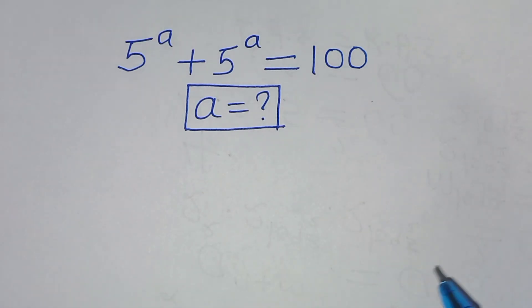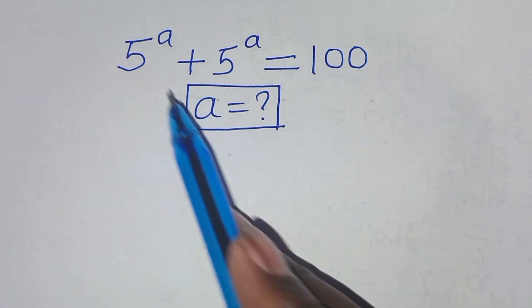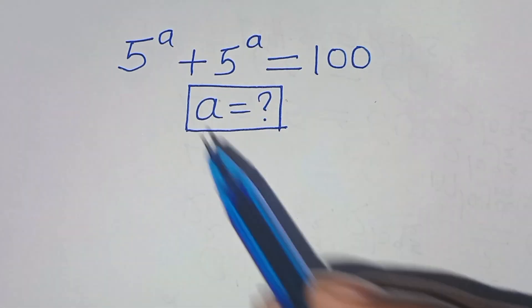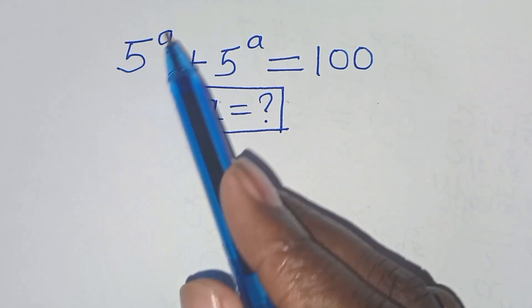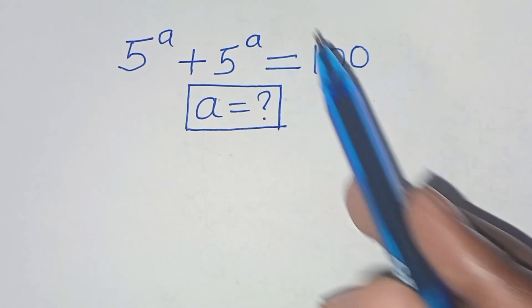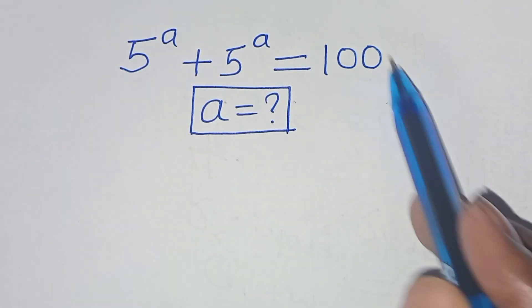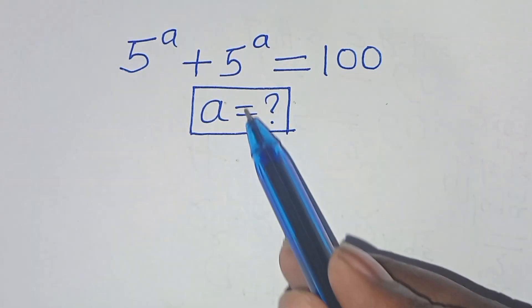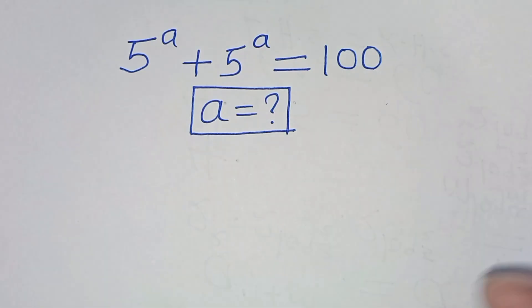Hello everyone, you are welcome to solve this nice exponential equation, which is 5 to power a plus 5 to power a, this is equal to 100. What is the value of a?